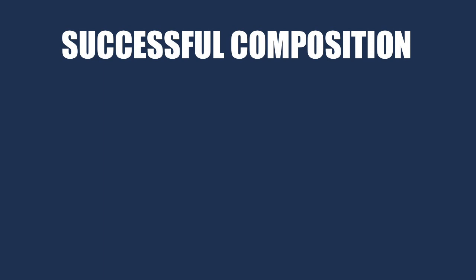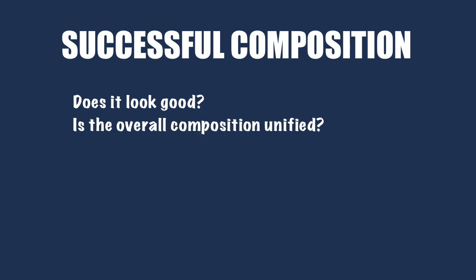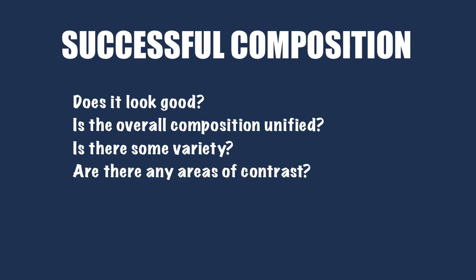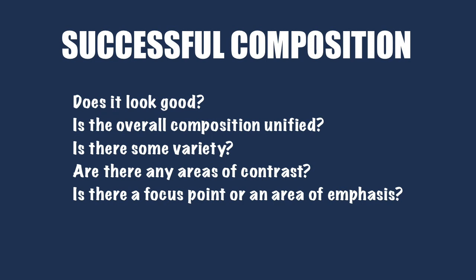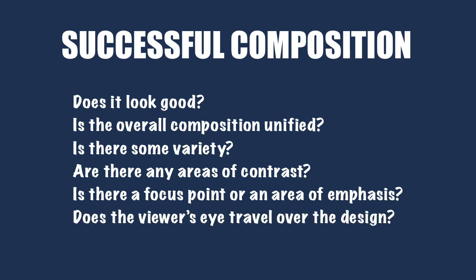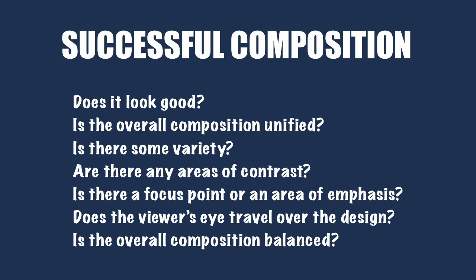So how do you know if you've made a successful composition? First of all, does it look good? If not, ask yourself: is the overall composition unified? What can I do to tie things together? Is there enough variety? Are there some areas of contrast? Is there a focus point or an area of emphasis? And from that focus point, does the viewer's eye travel over the design? Is the overall composition balanced? You decide which of the principles and elements you want to use — you don't need to tick all the boxes. This isn't a set of rules; it's just a way of helping us create something that's aesthetically pleasing and optimizes the viewer's experience.